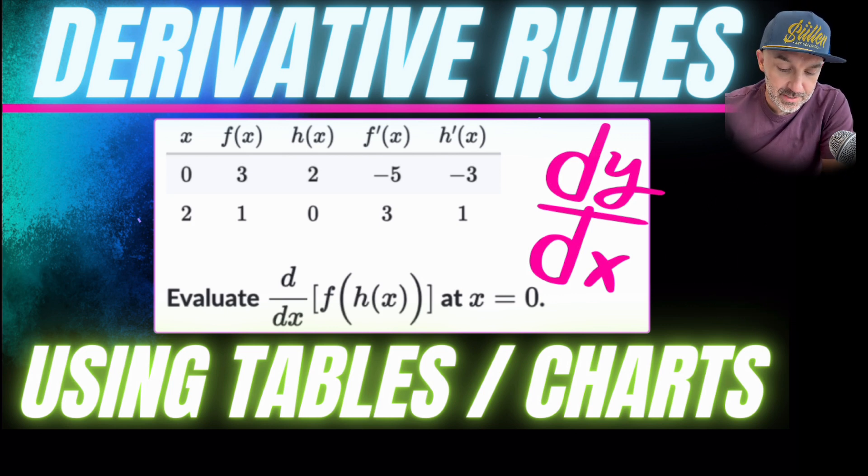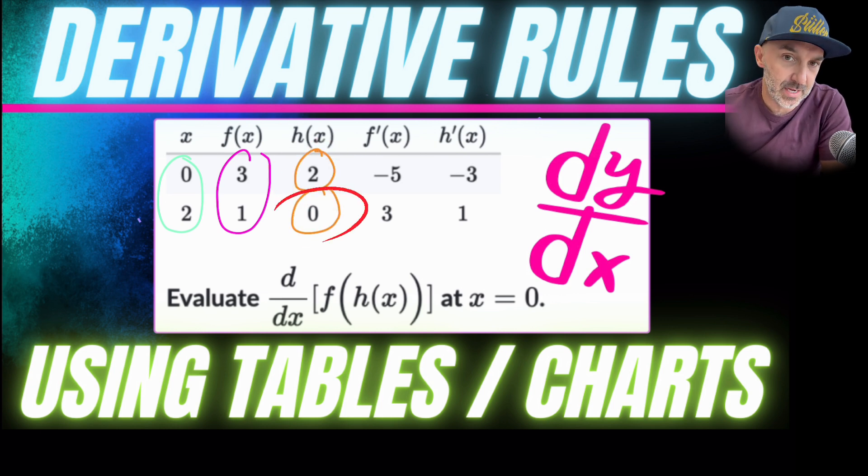We don't actually know what the function is but we do know what the possible outcomes will be. So for example looking at this table we'll read it like this. If x is 0 or 2 then f of x is 3 or 1 respectively and the same goes for h of x. If we substitute 0 into h of x we'll get 2 or if we substitute 2 in we'll get 0 and so on.